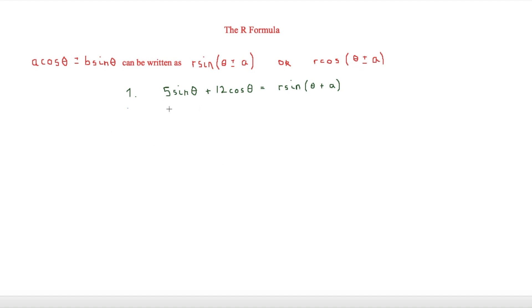This question says that 5 sin theta plus 12 cos theta is equal to r sin(theta + a), and what we have to do is find out what r is and what a is. In order to do this we're going to start by using the compound angle formulae to expand the right hand side.